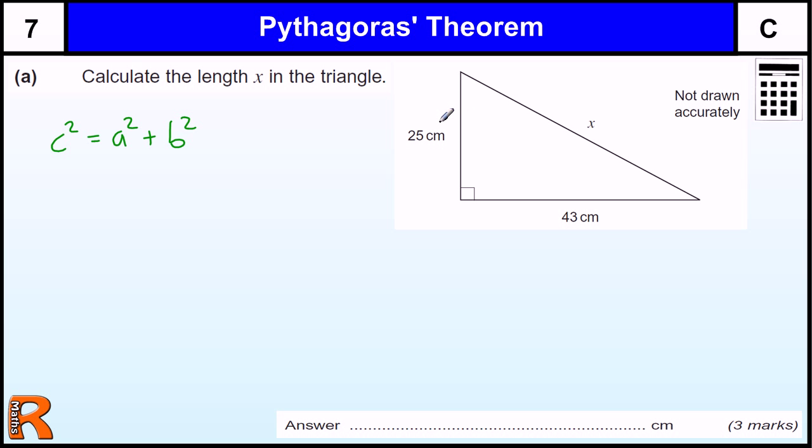If we label the sides so that the hypotenuse we label C, in this case that's equal to X, and then the other two sides, it doesn't matter, are A and B, then we know that the square of this side plus the square of this side equals the square of that side.